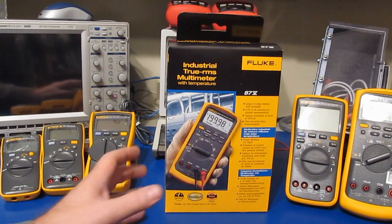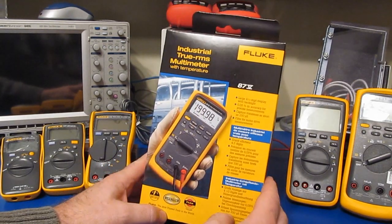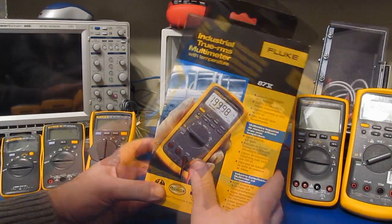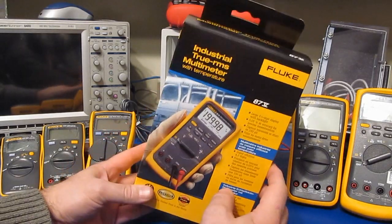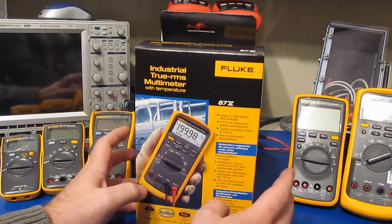Hello again and welcome. Today we're going to be looking at this brand new Fluke 87V. This meter was purchased directly from Fluke. It was manufactured in December of 2017. So this is right off the production line.